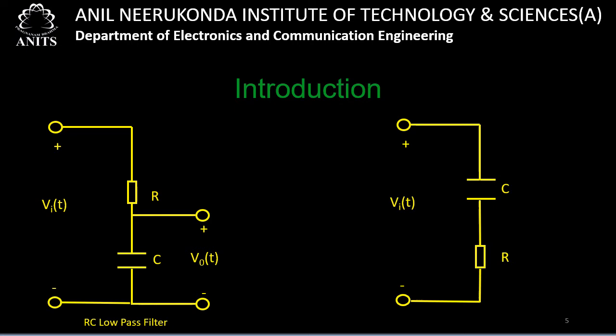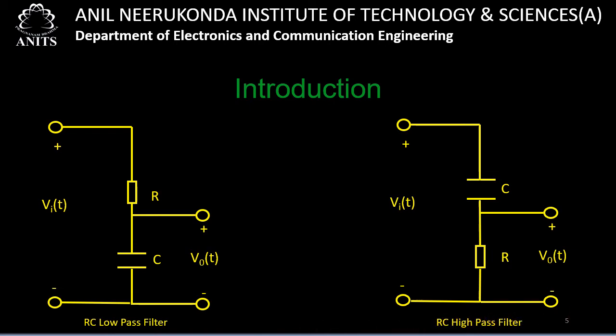If the output is taken across the resistor R, we call it an RC high pass filter circuit. Depending on where we take the output, we call the circuit either an RC low pass filter circuit or an RC high pass filter circuit.